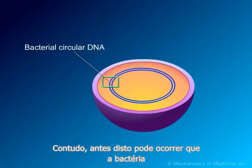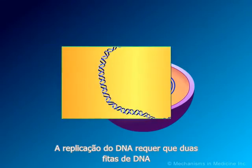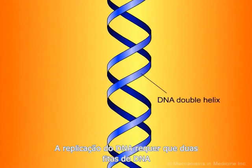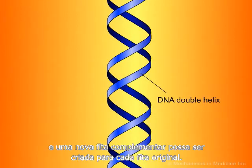However, before this can occur, the bacterium must make an identical copy of its complete circular DNA. DNA replication requires that the two strands of DNA separate so that the genetic code of the bacterium can be read and a new complementary strand can be created for each of the original strands.